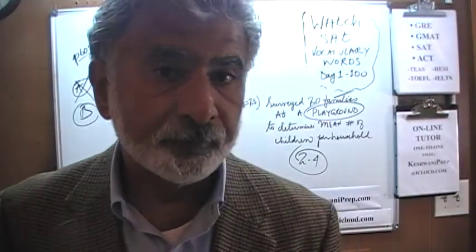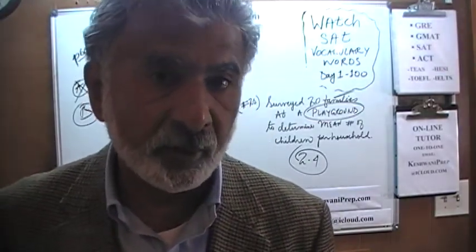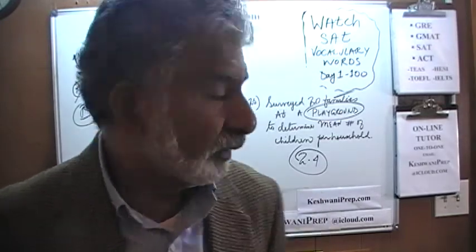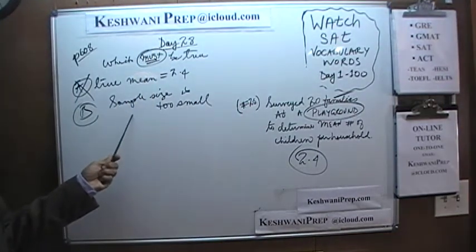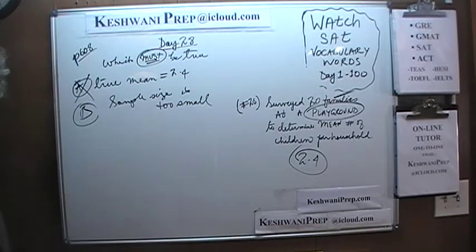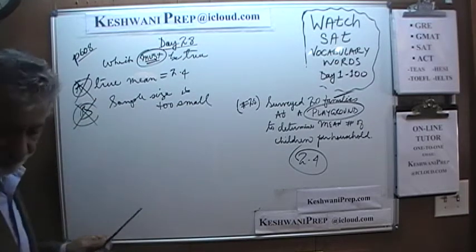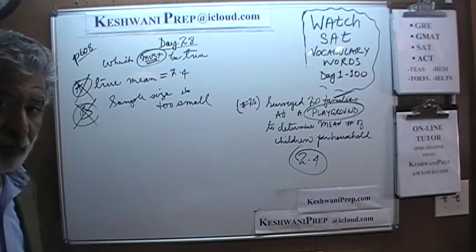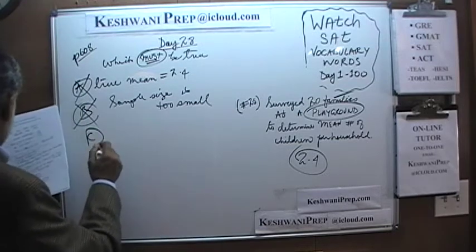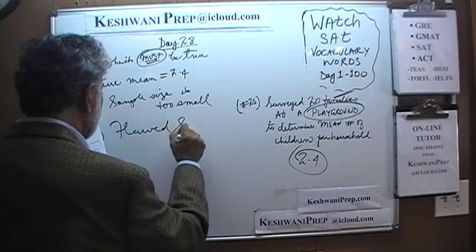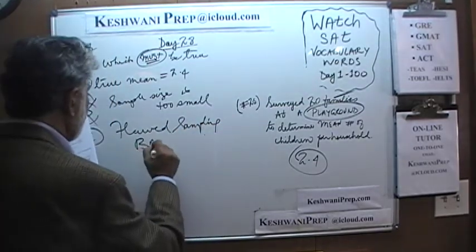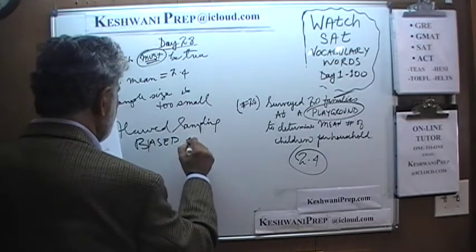You took 20 families but I have no idea how many families are in the community. There might be only 200 families or there might be 2,000. So we cannot say for sure that the sample size is too small — that statement is not necessarily true. Answer C says the sampling is flawed and therefore it is a biased estimate.